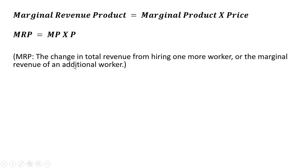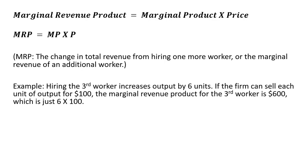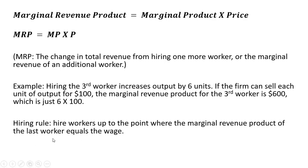The marginal revenue product, in words, is the change in total revenue from hiring one more worker. The idea is we hire another worker, that worker produces some stuff for the firm, the firm sells that stuff, and our revenue increases. For example, if hiring the third worker increases output by six units and the firm sells each unit for $100, the marginal revenue product of the third worker is $600 — the marginal product of six times the product's price of $100.